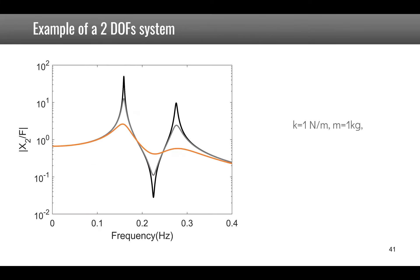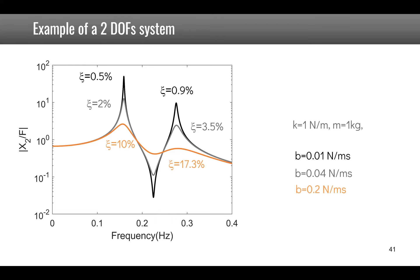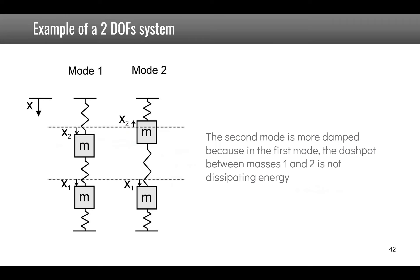For the values of damping considered, this gives xi_1 = 0.5% and xi_2 = 0.9% for one value, and 2% and 3.5% for a higher value, and 10% and 17.3% at the highest. Intuitively, in mode 1 the two masses move in phase so the middle spring is not compressed, meaning a dashpot there dissipates no energy. In mode 2, there is strain energy in all three springs, so more energy is dissipated in the second mode.